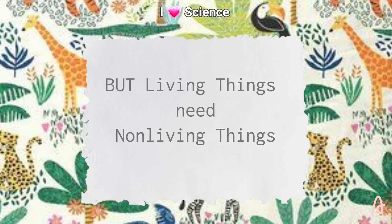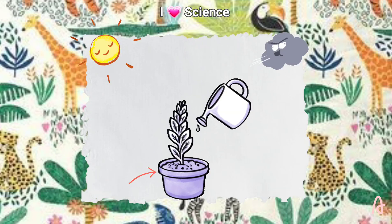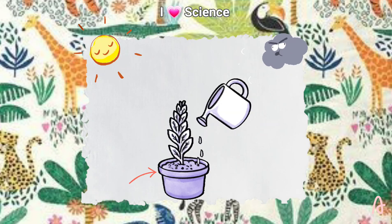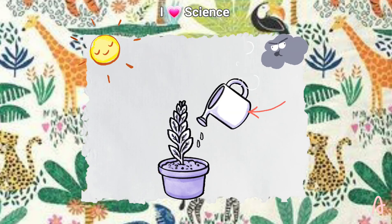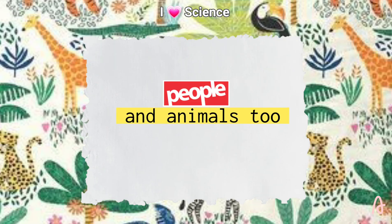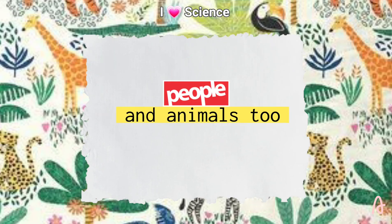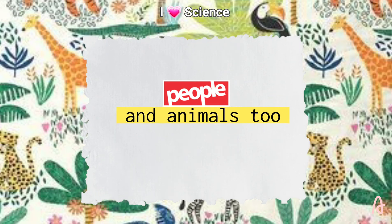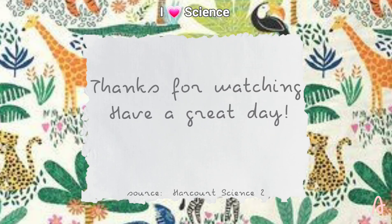But living things need non-living things. For example, a plant, a living thing, needs non-living things like light, water, and air to grow. People and animals also need food, water, and air to live.